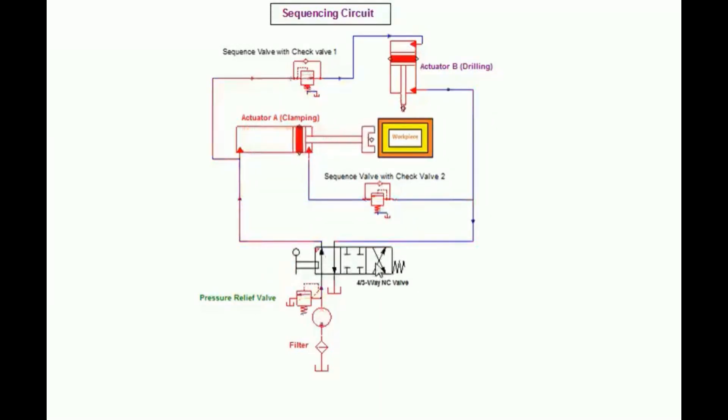When the third position is activating, cylinder B retracts first. After complete retraction of cylinder B, back pressure is built, so sequencing valve 2 opens and cylinder A retracts.